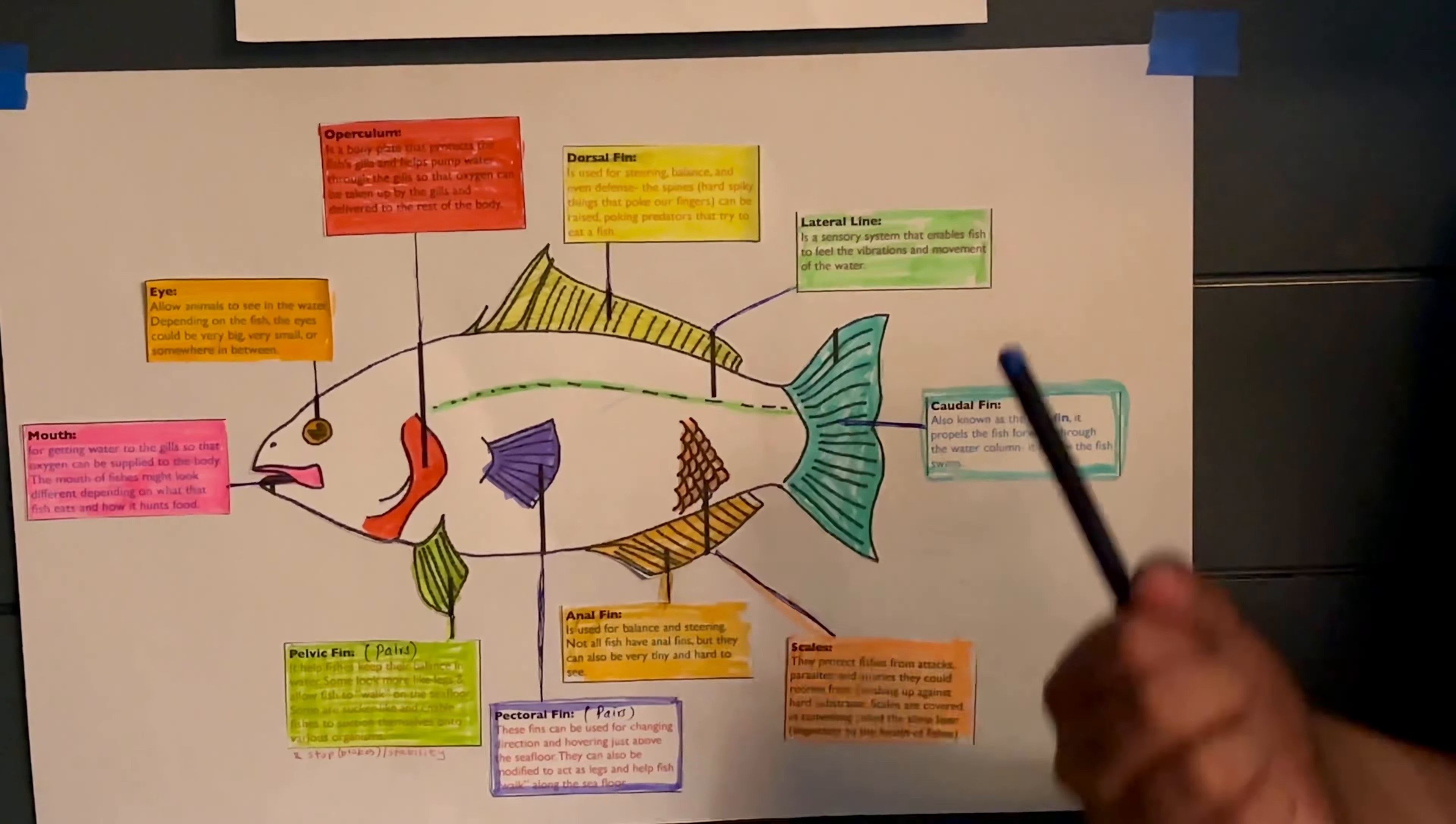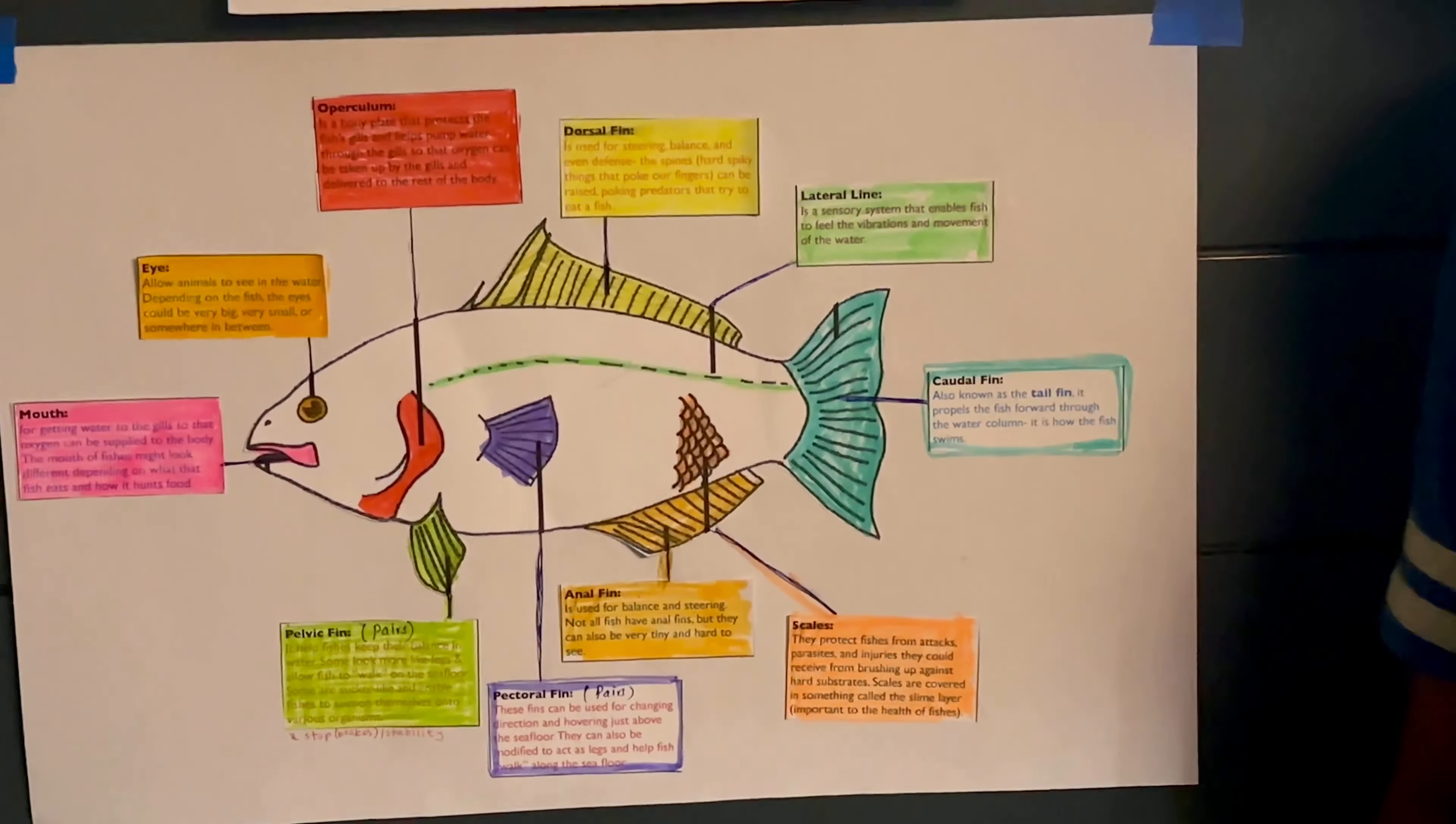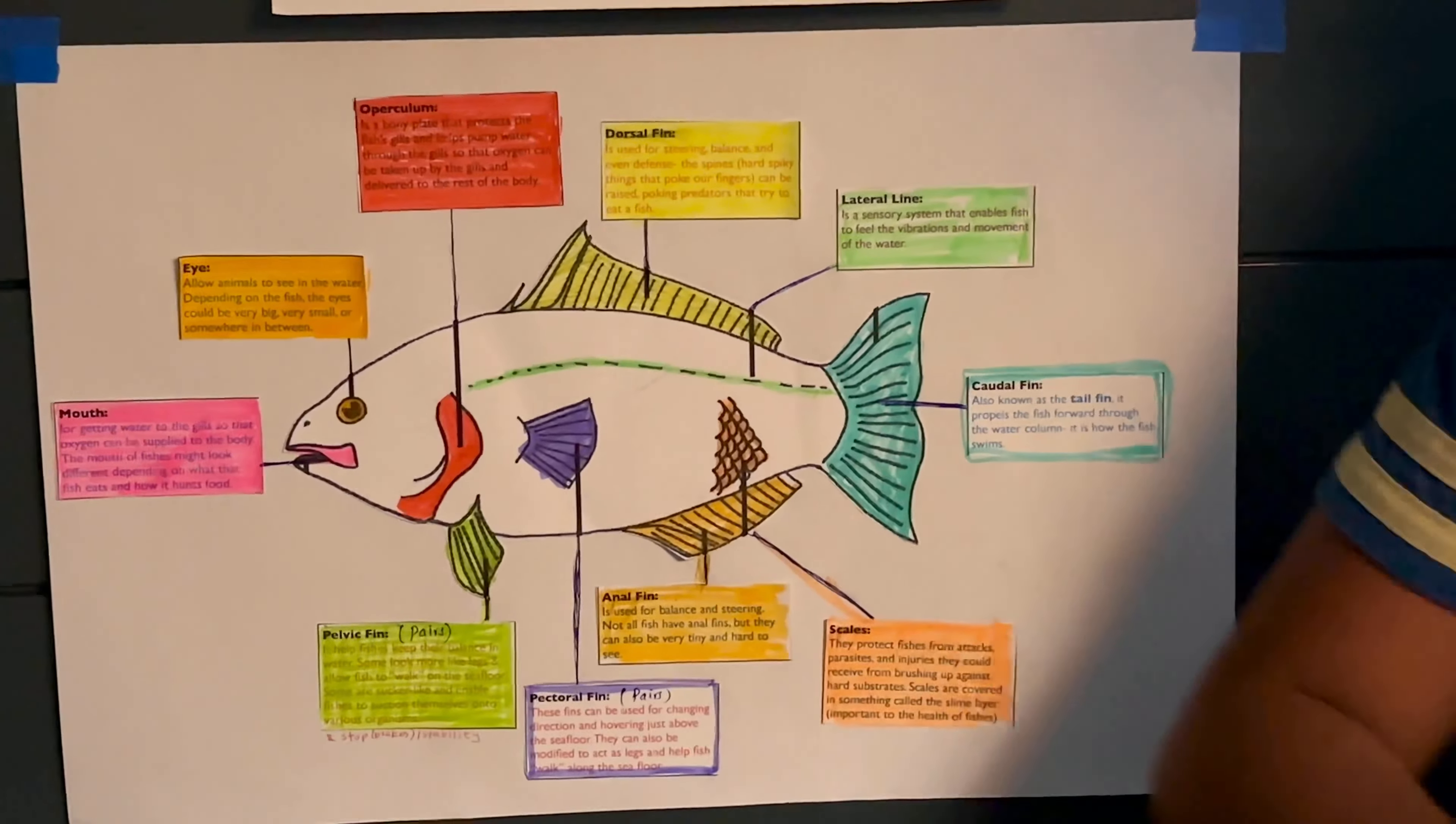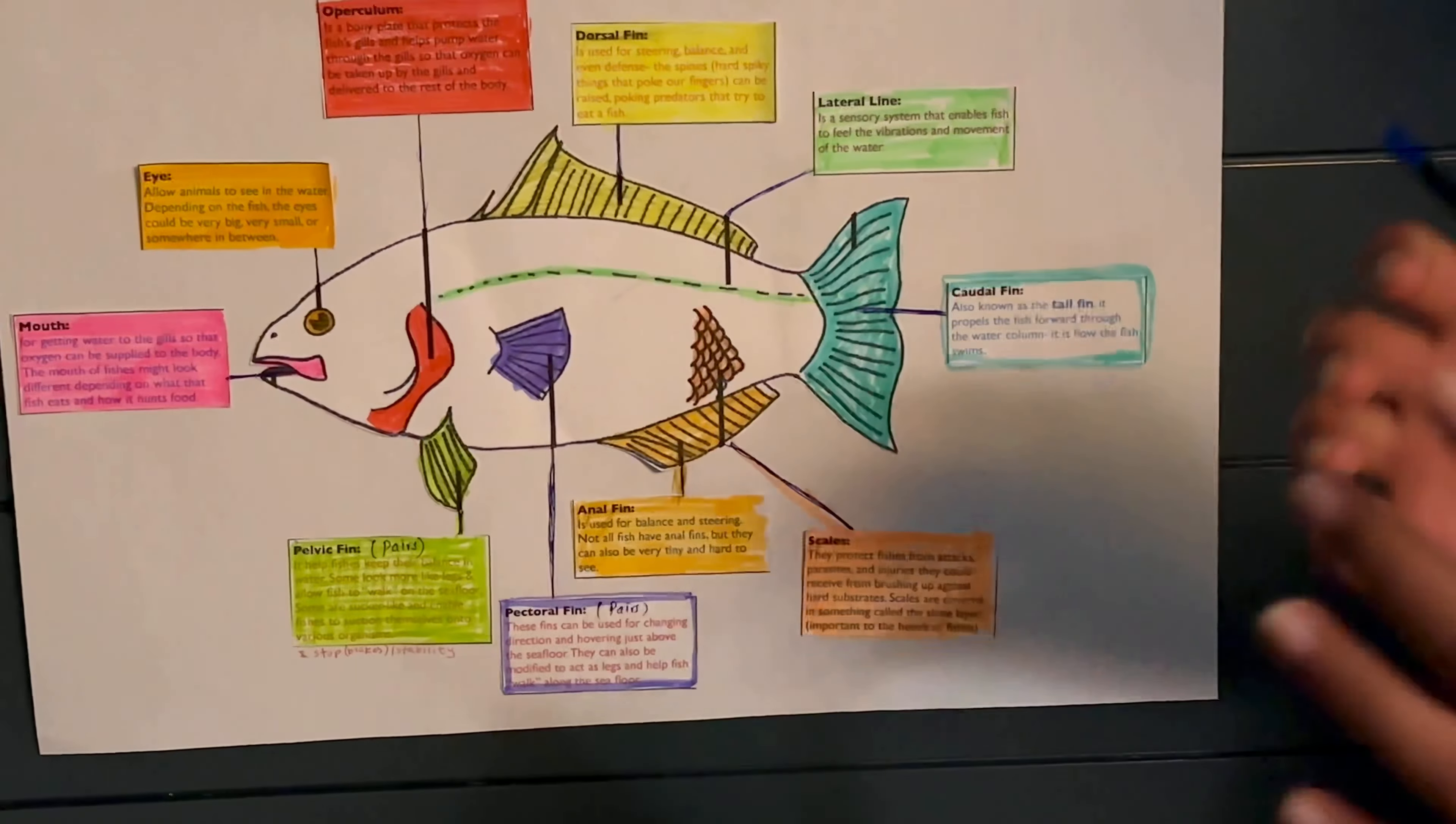The caudal fin is basically known as the tail fin but also acts as a motor. This motor is the one that gains speed and also steers the fish so it moves in a certain direction. The caudal fin is able to move at extremely high speeds so it can move away from predators or danger.